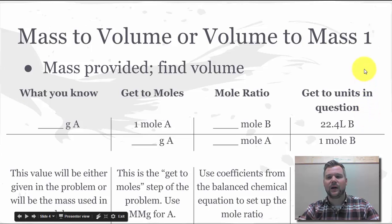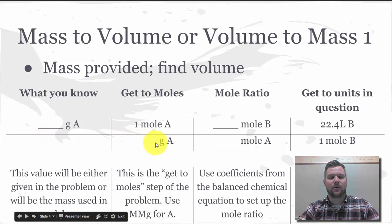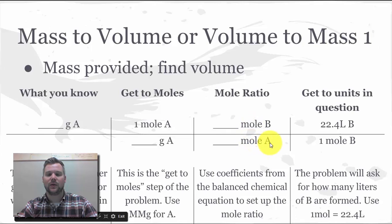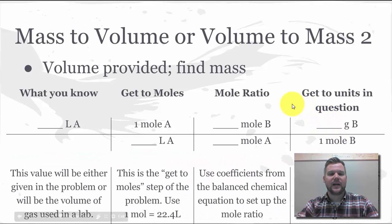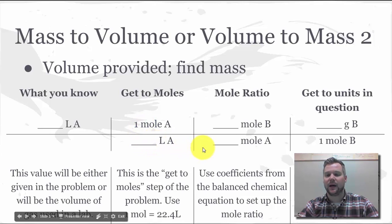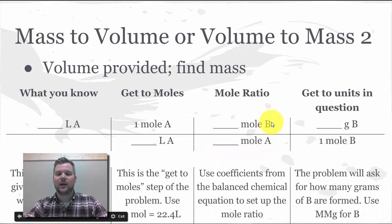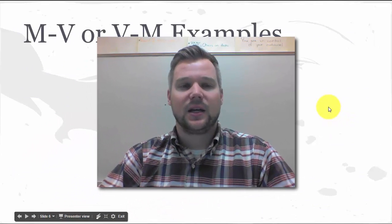Moving on, we have mass-to-volume or volume-to-mass. If we were given a mass and needed to find a volume, we would use the value we know in our top-left box, use the molar mass to get to moles, then our mole ratio using our coefficients going from chemical A to chemical B, and then to get to liters we need to use 22.4 liters of that gas. The second variety: if a volume is provided, take what I know, put it in my top-left box, use 22.4 liters equal to one mole — because it's always 22.4 liters under standard conditions — going from chemical A to chemical B using the mole ratio, and then to get to grams use the molar mass of that substance.